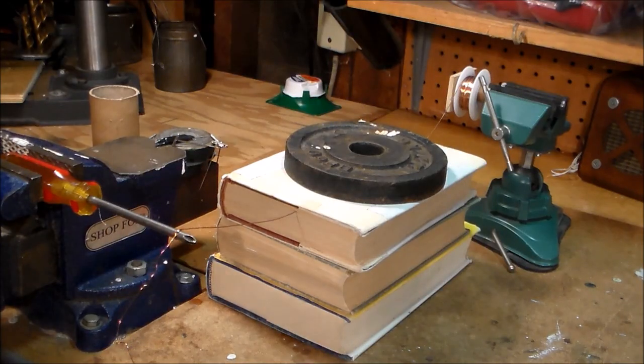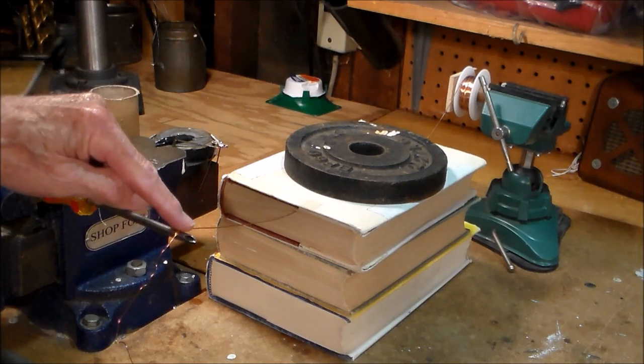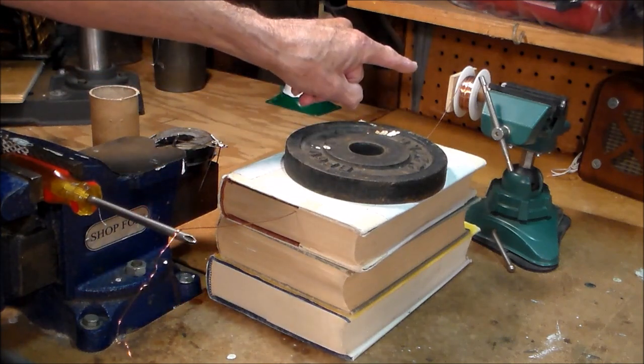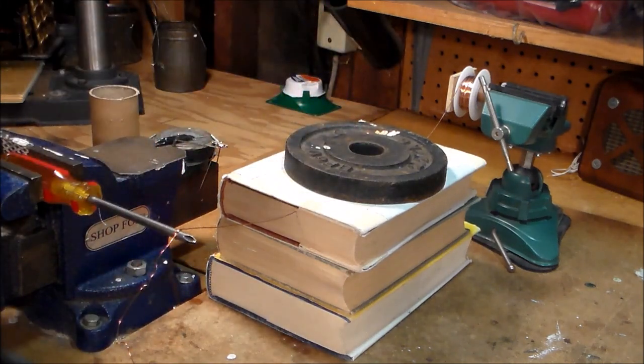Here's what your final setup should look like. Just make sure that the tip of your loop tool, the center of your books, and your spindle are more or less in a straight line.